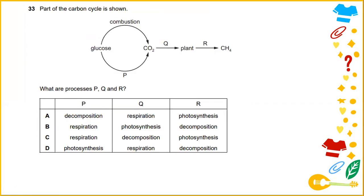Part of the carbon cycle is shown. What is the process P? P is actually the process where glucose produces carbon dioxide. P is the process of respiration. During the process of photosynthesis, carbon dioxide is used by the plant. The process R is actually decomposition to change to methane CH4. The answer would be B.